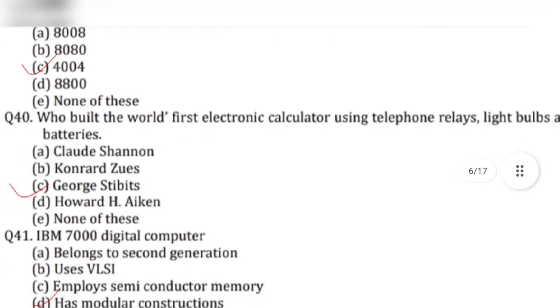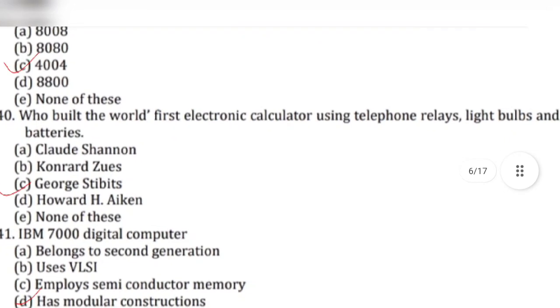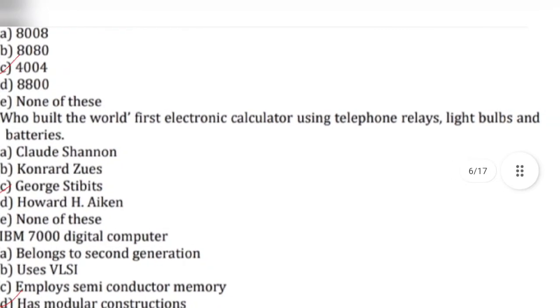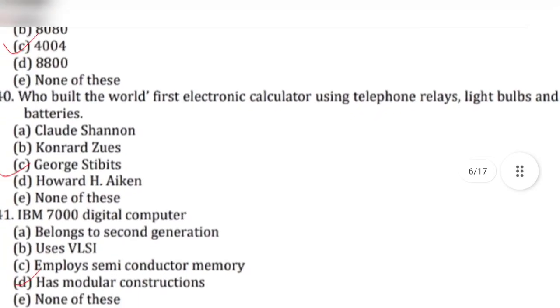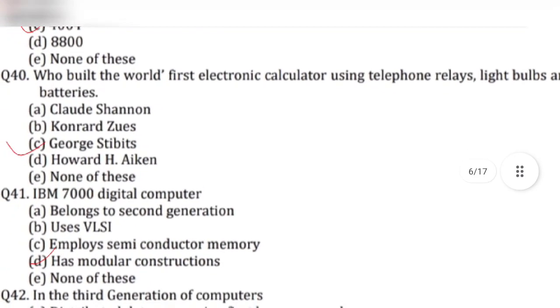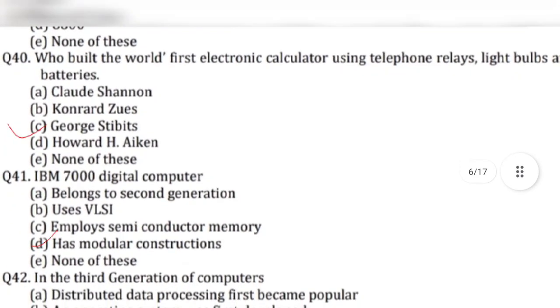Question 40: Who built the world's first electronic calculator using telephone relays, light bulbs and batteries? Answer is option C, George Stibitz.